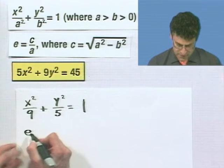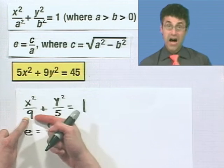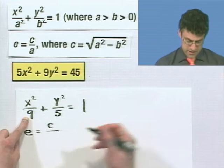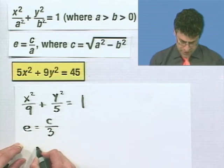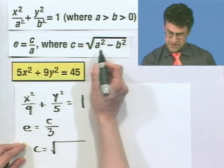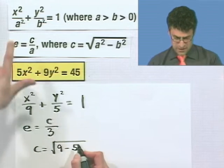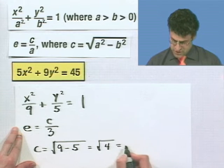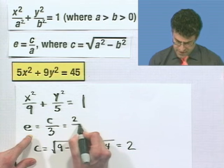Now I want to find e. What is e? Well, e is just c divided by a. If a squared equals 9 and a is known to be positive, there's only one solution. a has to be the number 3. So we know this is going to be a 3. Now I've got to figure out what c is. c is the square root of the differences of the squares, so it's going to be 9 minus the 5. That's just going to be the square root of 4, which equals 2. So c equals 2, so this equals 2 divided by 3.